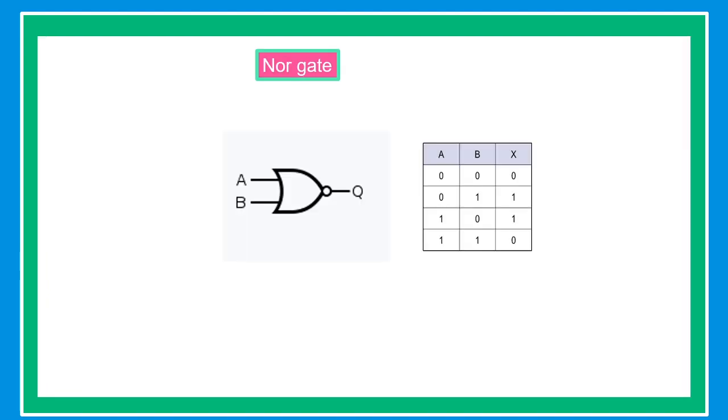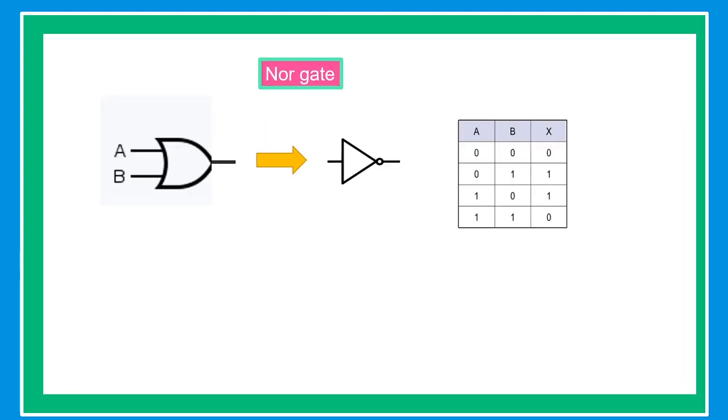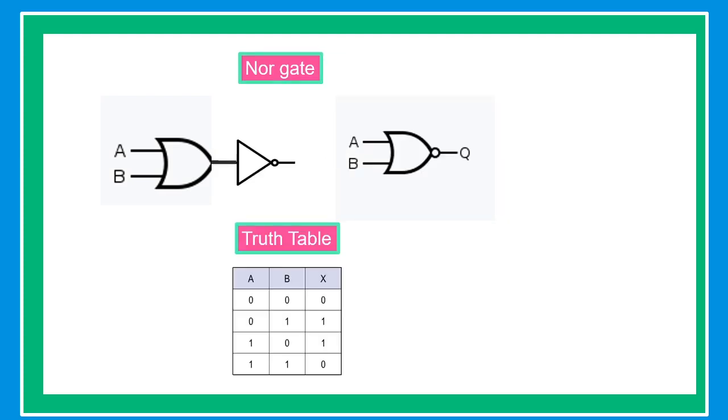NOR gate. The NOR gate is an OR gate followed by a NOT gate. This is the basic construction of a NOR gate. The truth table of the NOR gate: when A and B are both 0, the output is 1.